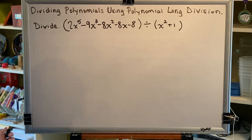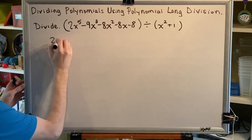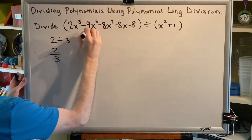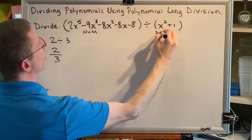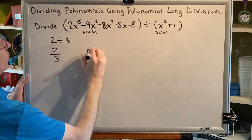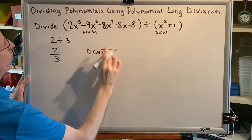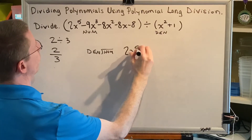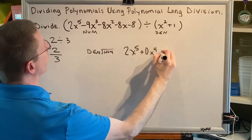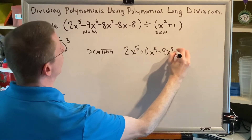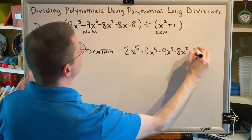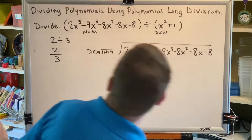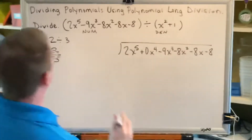The first thing we want to understand is that division is kind of like a fraction. If someone says 2 divided by 3, that's equivalent to the fraction 2 thirds. So this is our numerator and this is our denominator. When we set up our problem in long division form, we want our denominator on the outside and our numerator underneath the division bar. We've got 2x to the fifth plus 0x to the fourth minus 9x to the third minus 8x squared minus 8x minus 8 underneath the division bar, and outside we have x squared plus 1.